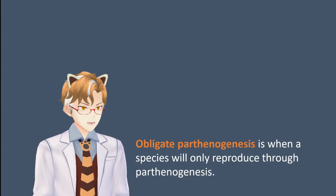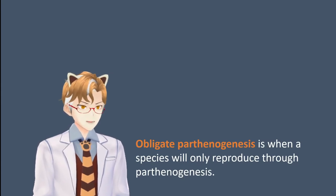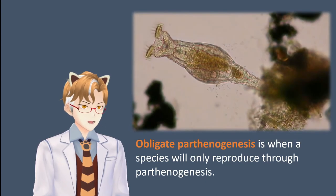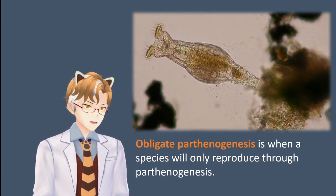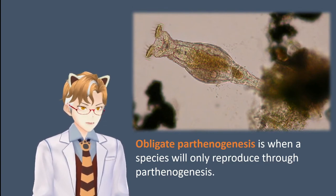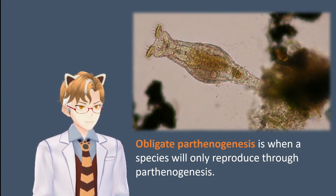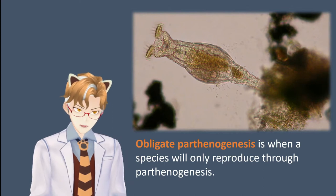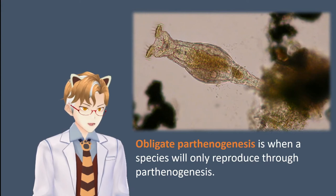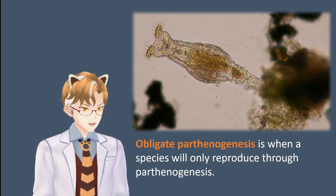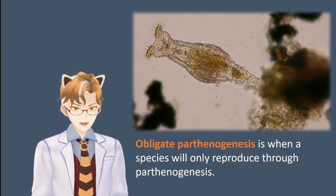Obligate parthenogenesis is when a species will only reproduce through parthenogenesis. We gave an example of this during the radiophiles lecture of bdelloid rotifers. This group of rotifers are exclusively female, and they give birth to offspring through parthenogenesis, laying eggs without being fertilized through sex. Bdelloid rotifers have gone tens of millions of years reproducing exclusively asexually, and there are no males known from this class of rotifers.